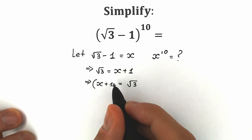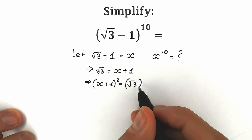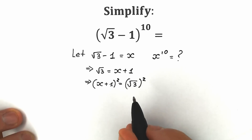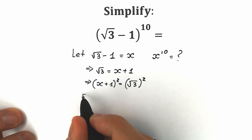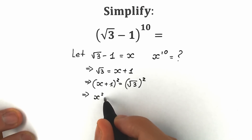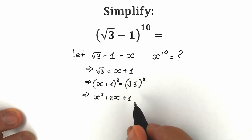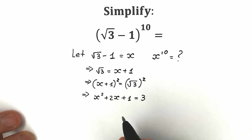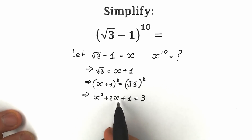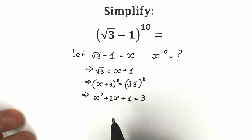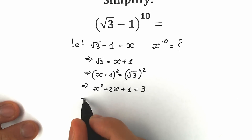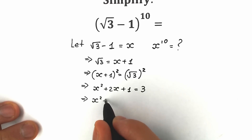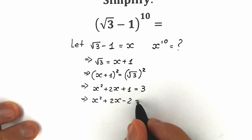Now let's raise both sides to the second power, squaring both sides. As a result, we can cancel the square root sign, so we have 3 on the right side. On the left side, using the basic school formula, we have x squared plus 2x plus 1 equal to 3. We need to rearrange: bringing 3 to the left side gives us x squared plus 2x minus 2 equal to zero.